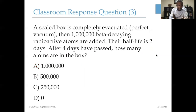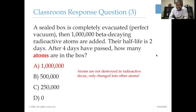One more question: I have a sealed box that is completely evacuated — a perfect vacuum. I place 1 million beta decay radioactive atoms in it, and we know their half-life is two days. After four days have passed, how many atoms are in the box? This is tricky. The answer is 1 million, because atoms are not destroyed in radioactive decay. They only transform from one type of atom to another. The problem is asking us to count the number of atoms in the box, not distinguishing between types.